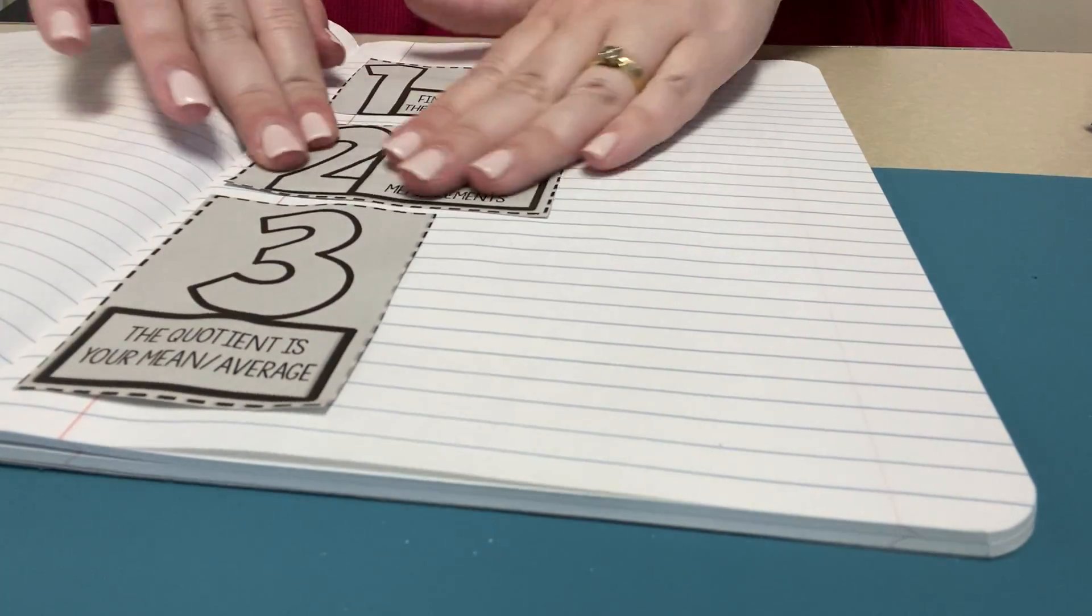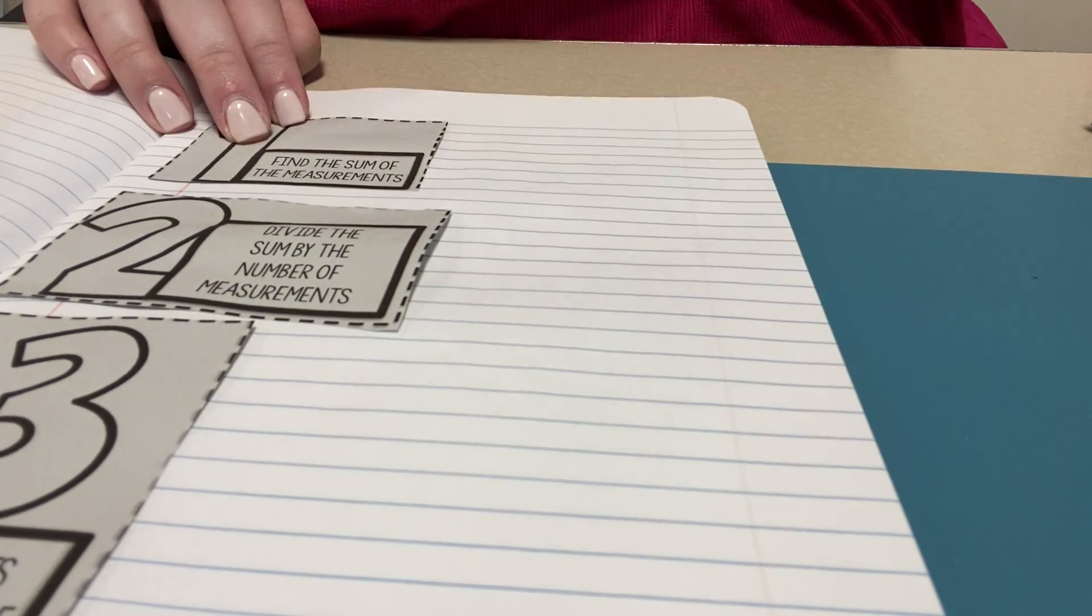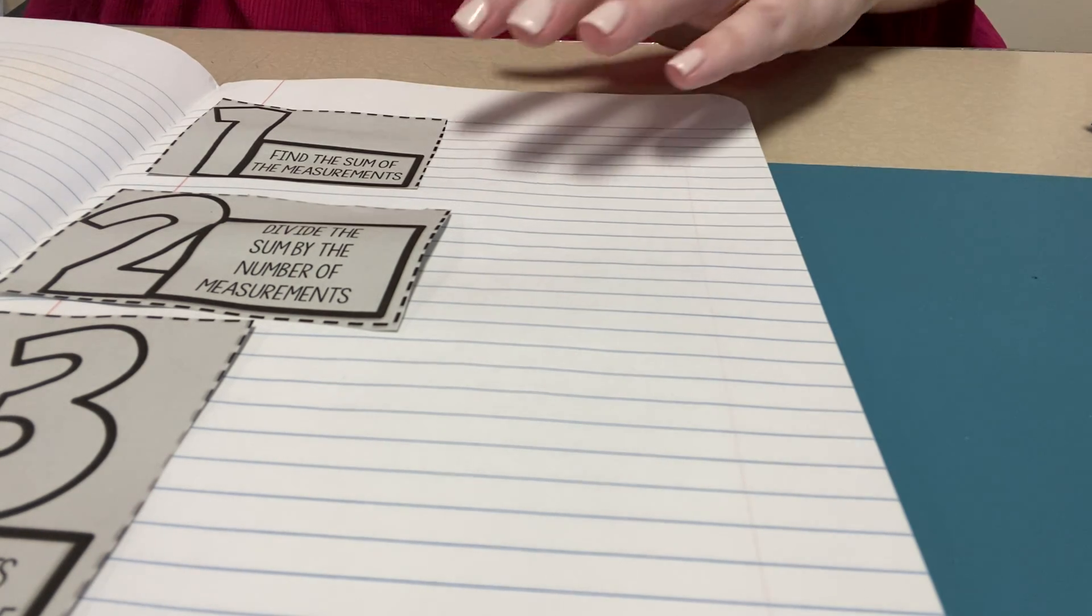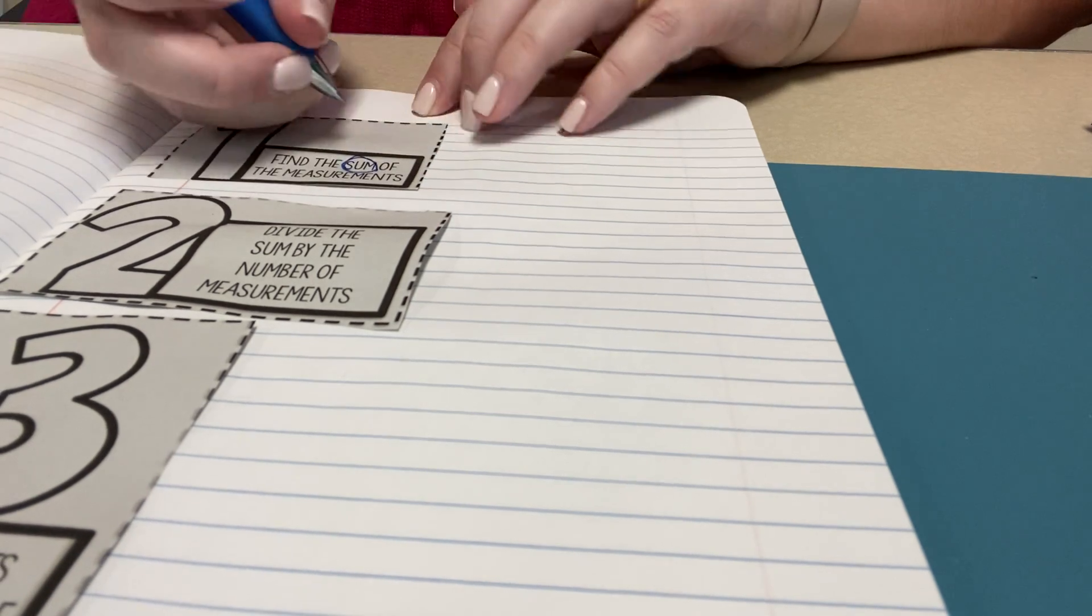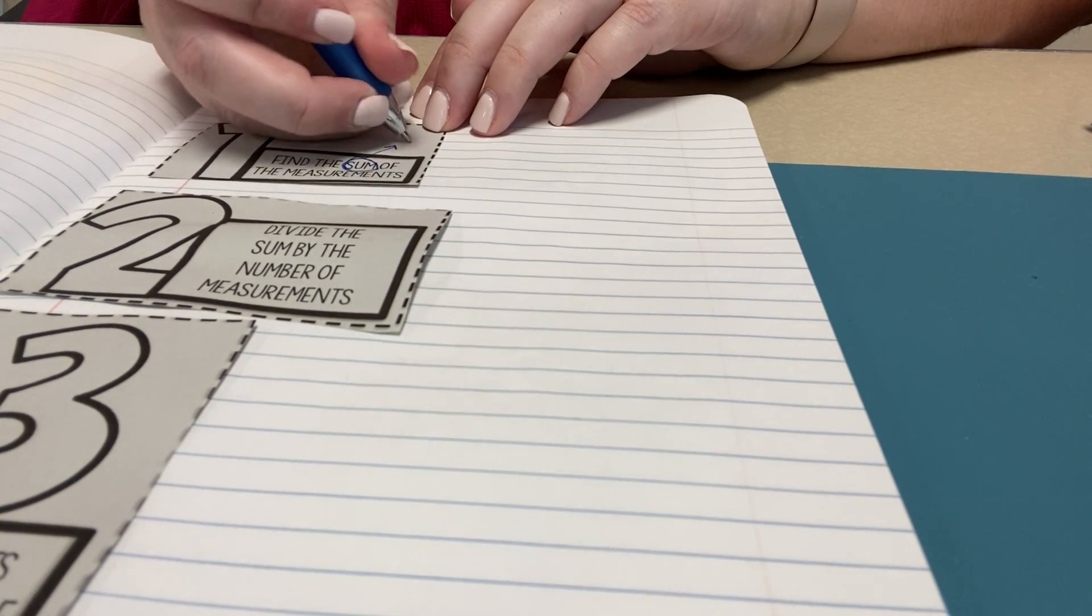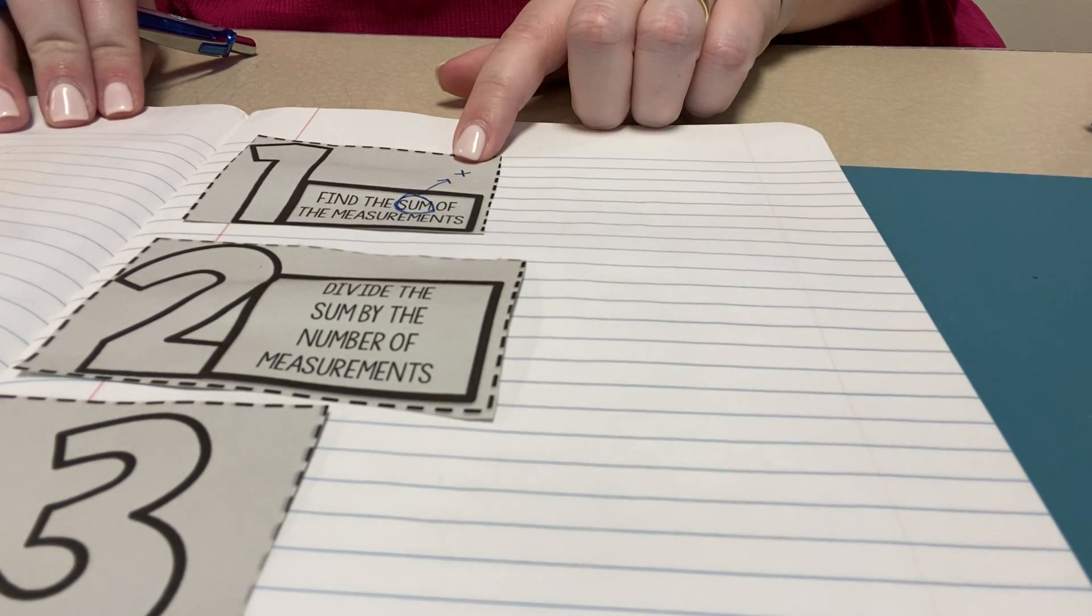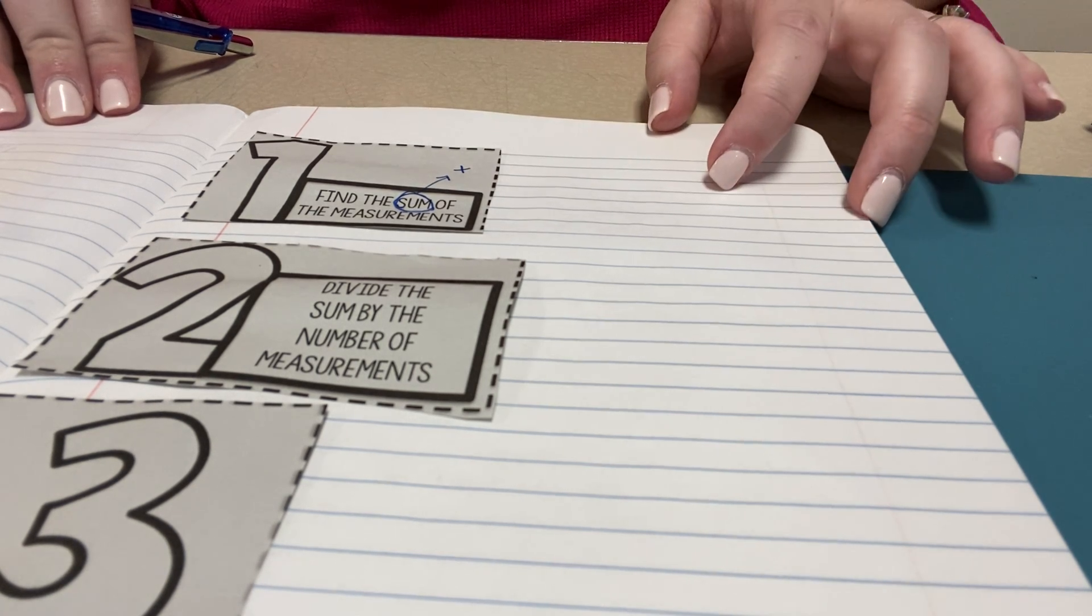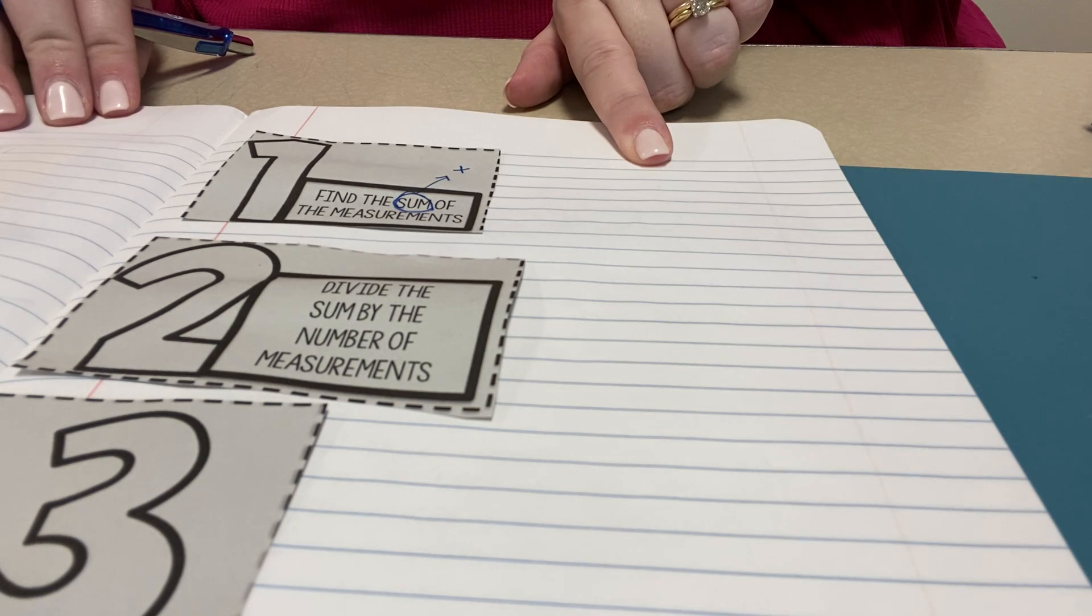So the first step of calculating an average is to find the sum of the measurements. And what do we think of when we think of the word sum? We think of addition. So we're going to circle that word sum and draw a little arrow and draw a nice big plus sign because we're going to add up the trials we've done first. So off to the side, we'll do a problem.